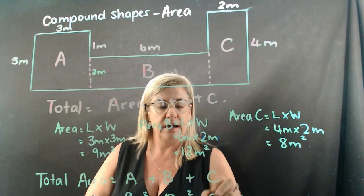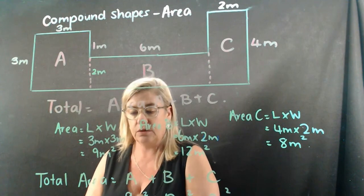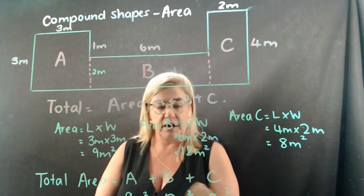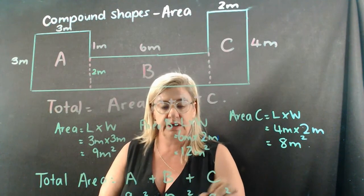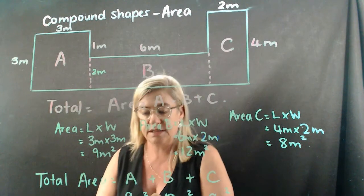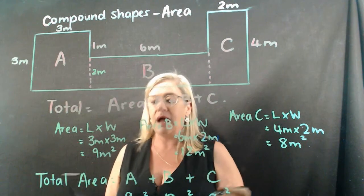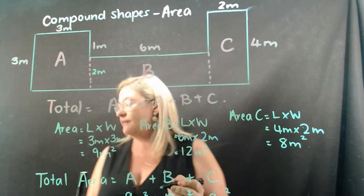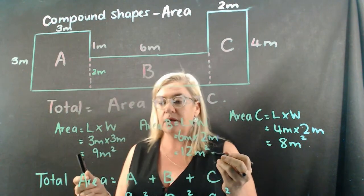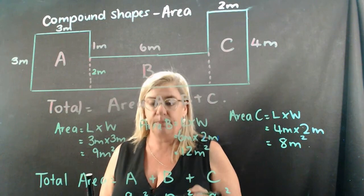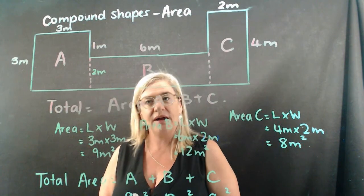I can see two numbers that go really well together to make twenty, twenty-nine meters squared. And therefore, the answer is the total area of this compound shape is twenty-nine meters squared.